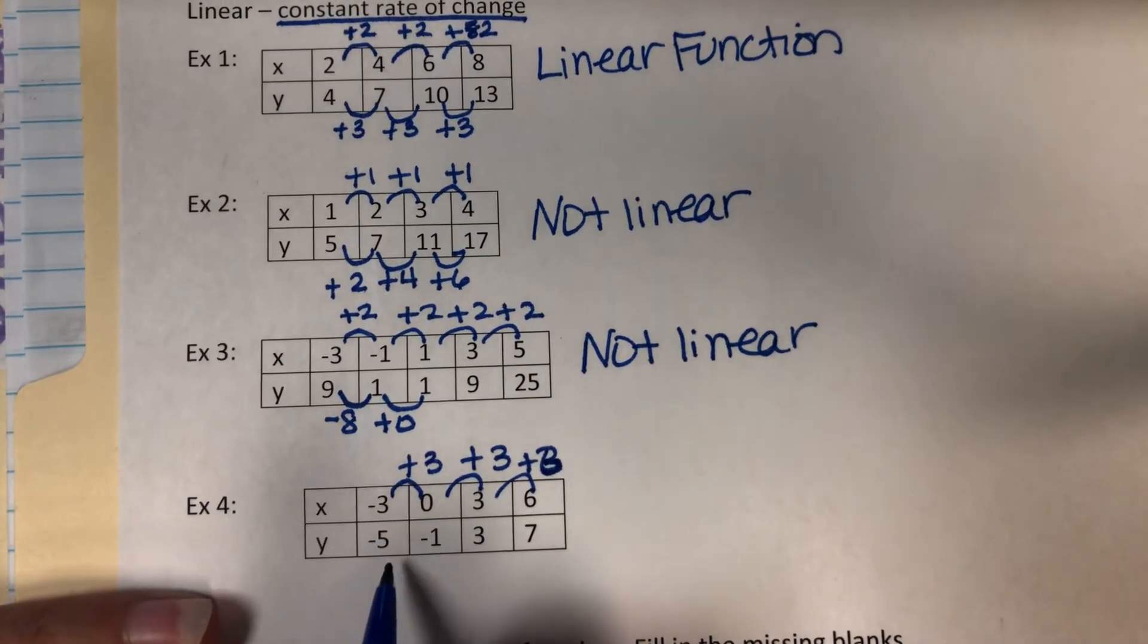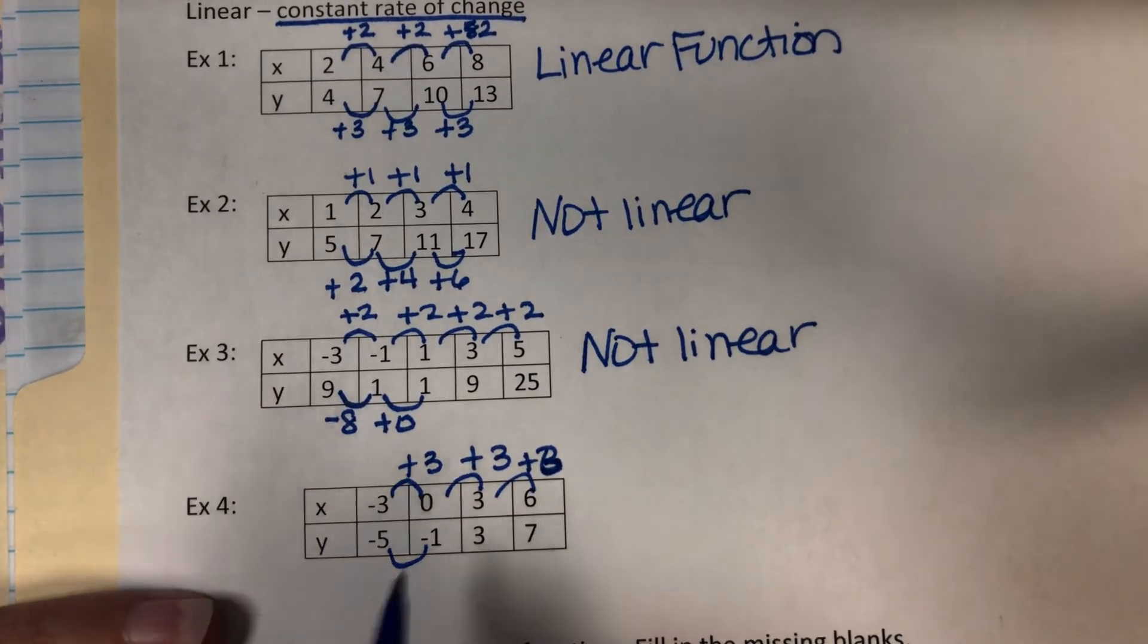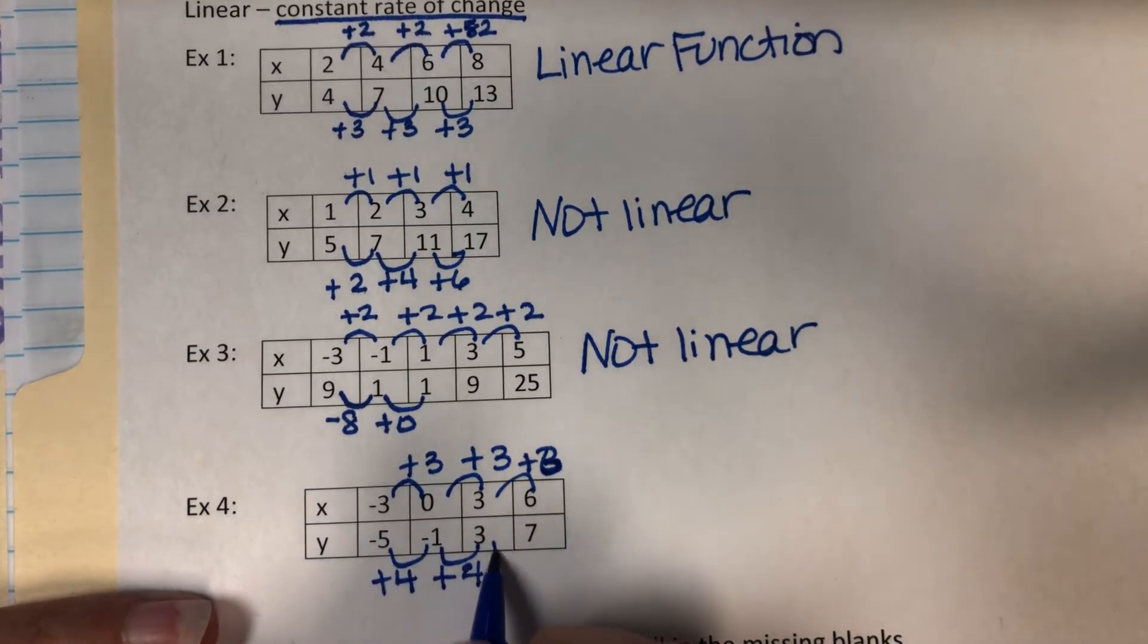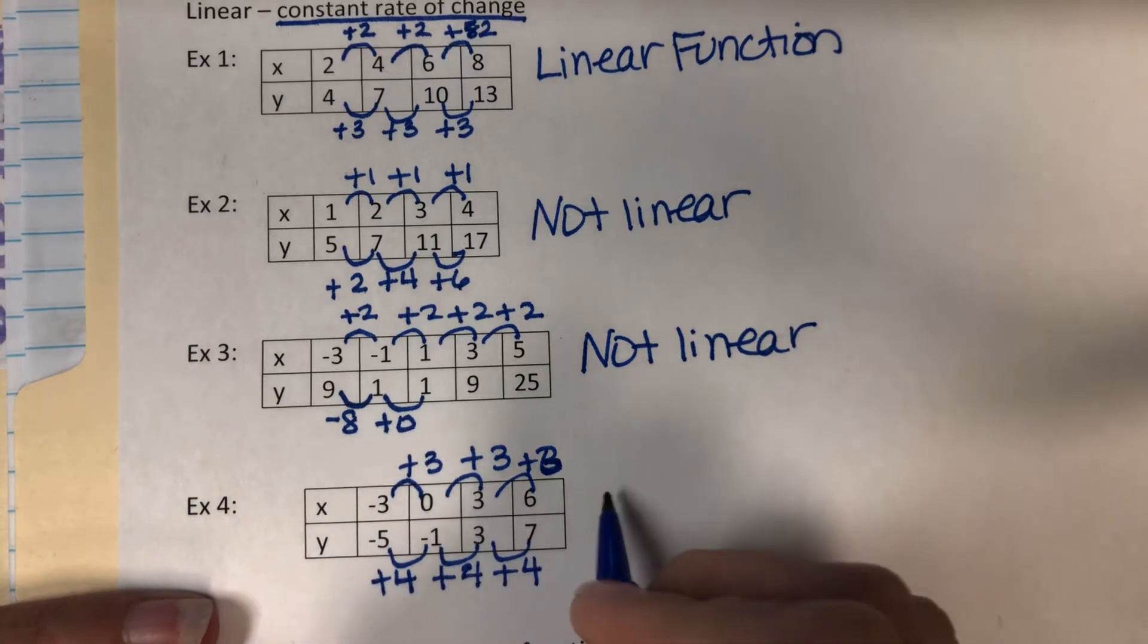Let's look at the y's. Negative 5 to negative 1, you add 4. Negative 1 to 3, you add 4. And 3 to 7, you add 4. That means it is linear.